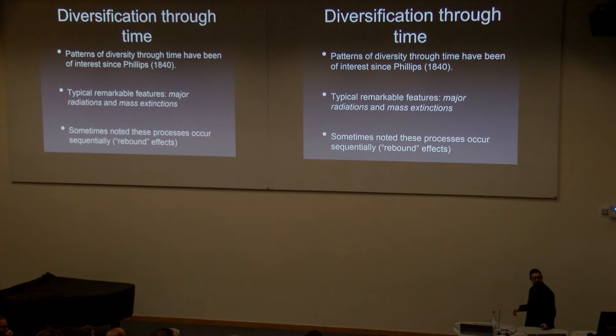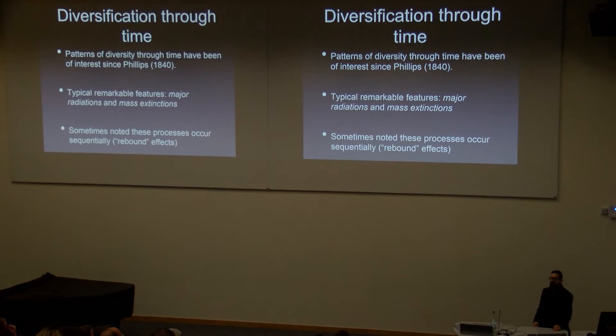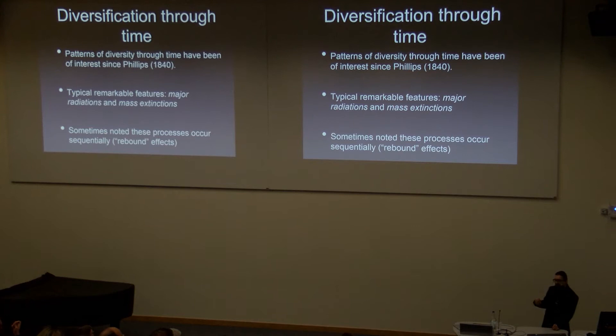So what is this talk about? Patterns of diversification through time, of course, have been of enduring interest for a long time for paleontologists ever since Philips and others noticed that there were some very big bulges in patterns of diversification through time, which is how we ended up with things like the Paleozoic and the Mesozoic. Typical features that we as paleobiologists are interested in are things like major radiations and mass extinctions.